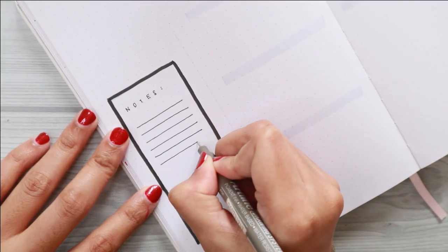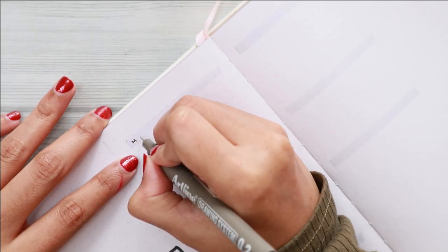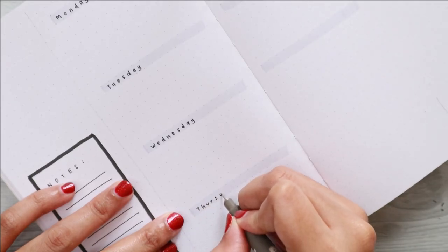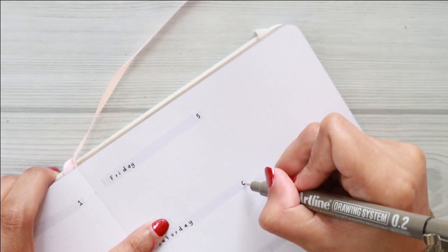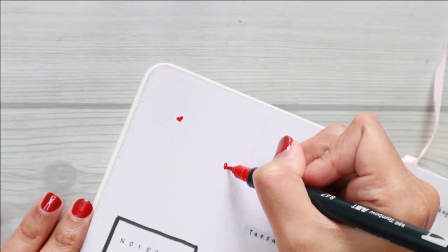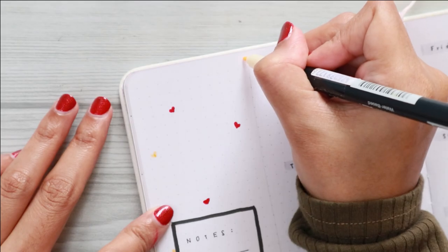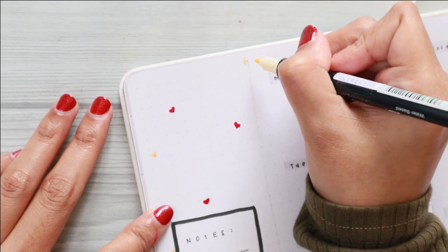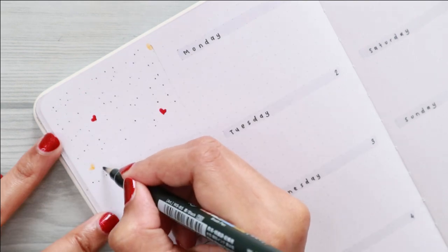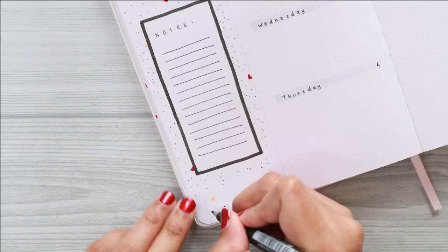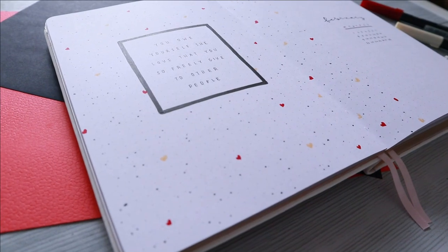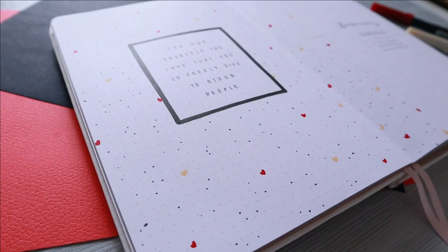But I found it very helpful, especially this vertical Dutch door layout, because the notes section will still be visible from the next page. If I've already moved into the second week of February, for example, I can still easily access this section. I don't need to create another notes section next week as well as the decoration, so it is a win-win situation for me. So here's the final flip-through of this month's setup.